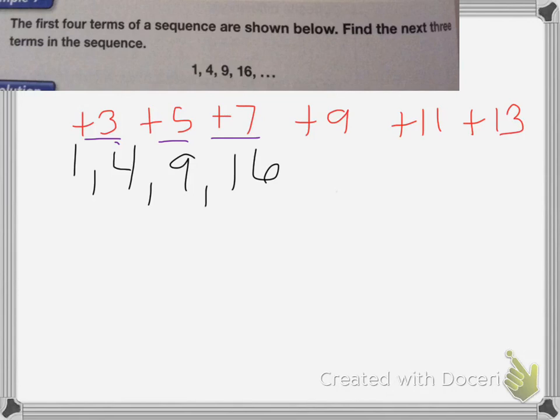So 16 + 9 is 25. 25 + 11 is 36, and 36 + 13 is 49. So that could be one of the rules. I'd say it's the next odd number, add the next odd number.